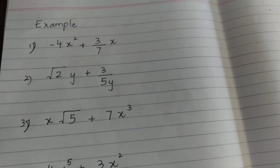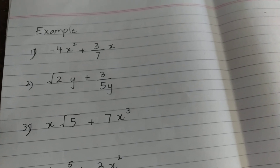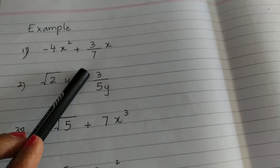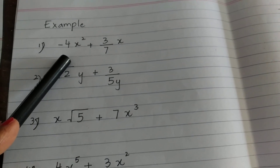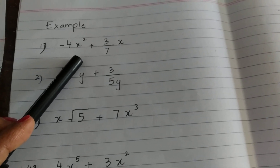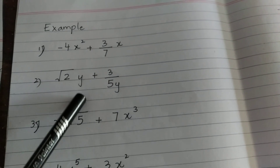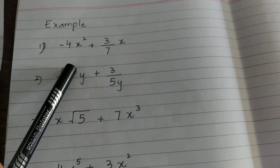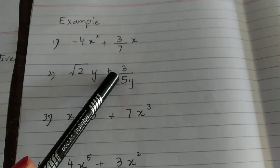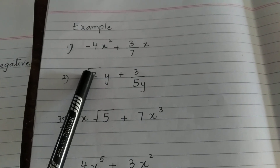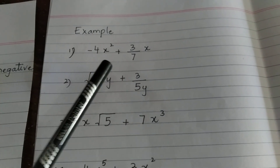Now we will look at examples and check the three conditions. The first expression is minus 4x squared plus 3/7 x. The exponent on x squared is 2, which is a positive non-negative integer — first condition fulfilled. The exponent is 1, not in fractional form — second condition fulfilled. The coefficients minus 4 and 3/7 are both real numbers — third condition fulfilled. So this is a polynomial expression.